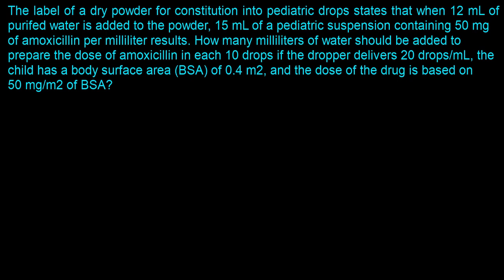There's a lot to unpack, but we can start with the governing equation for reconstitution calculations: Final Volume equals the Volume of the Diluent plus the Powder Volume — we'll call that PV. Powder Volume is PV.